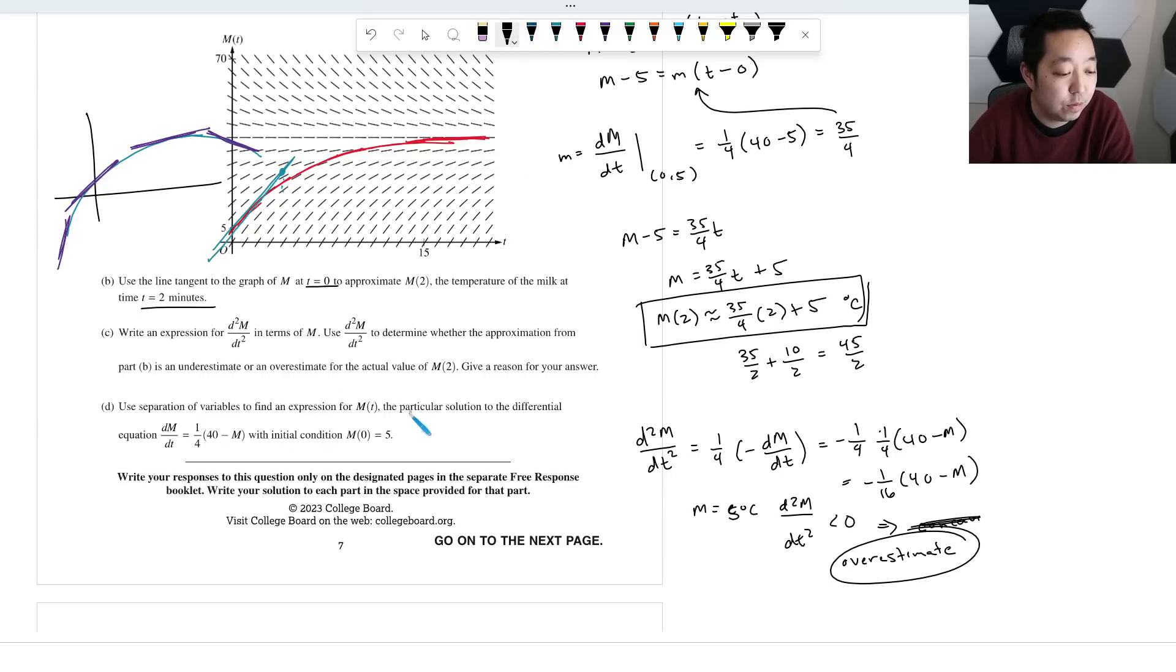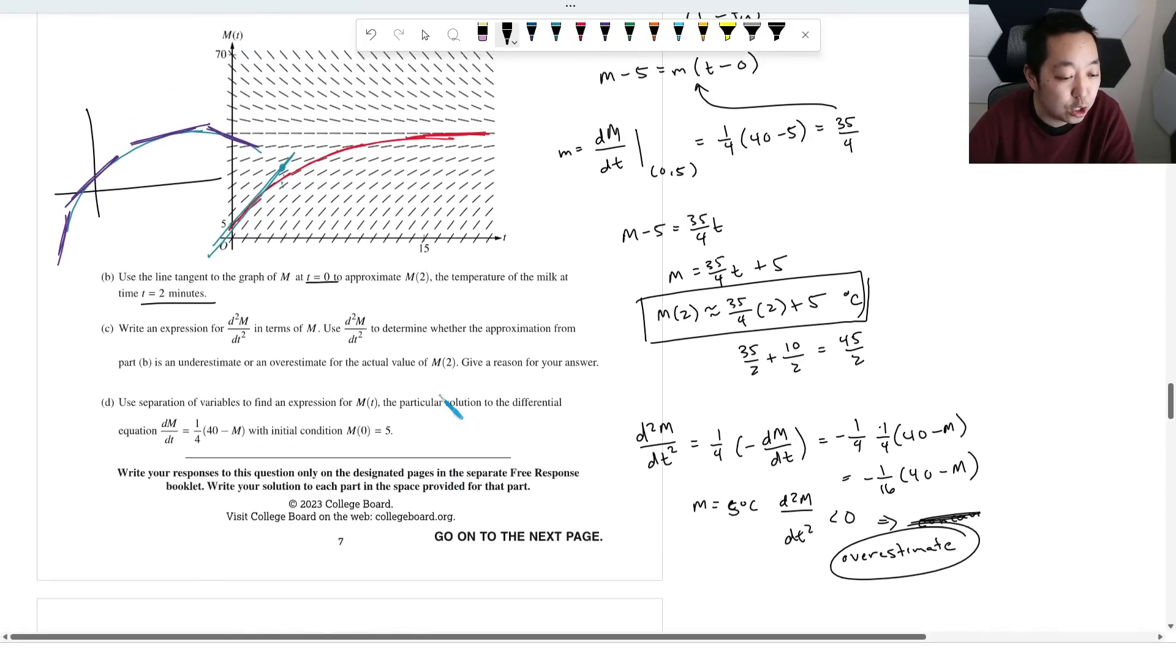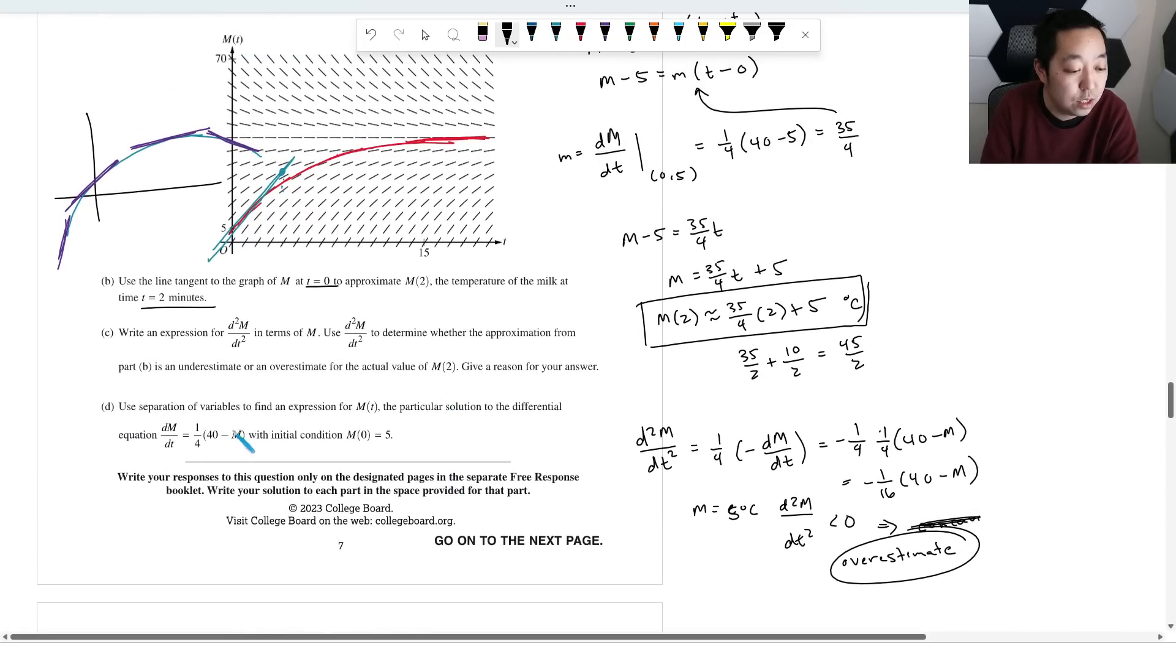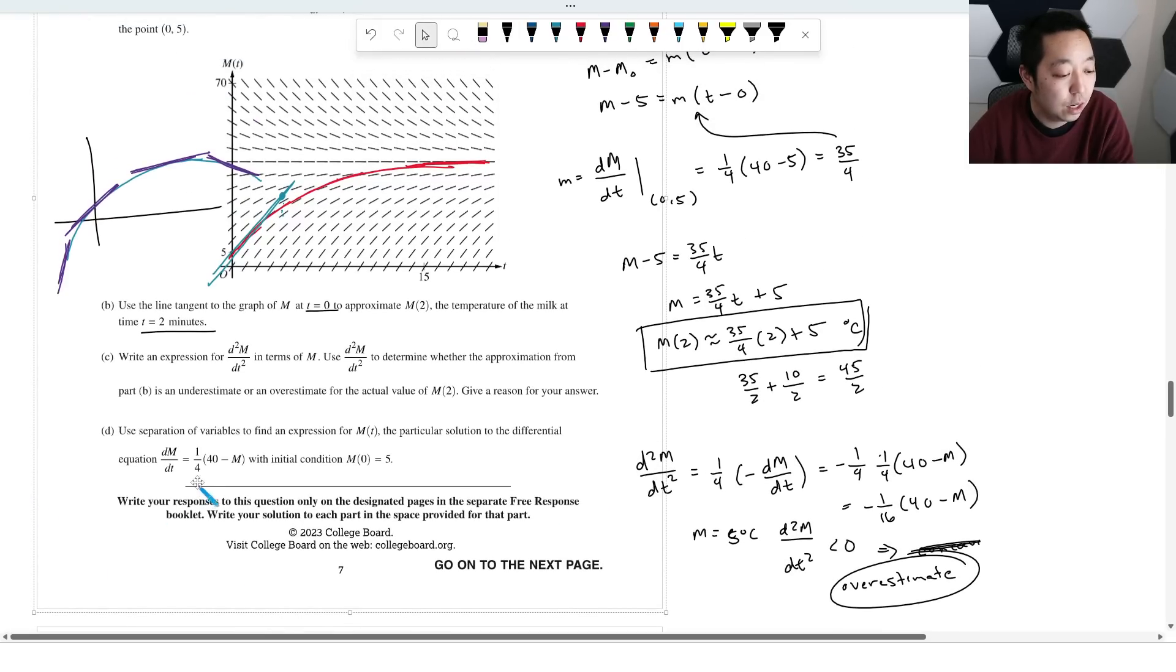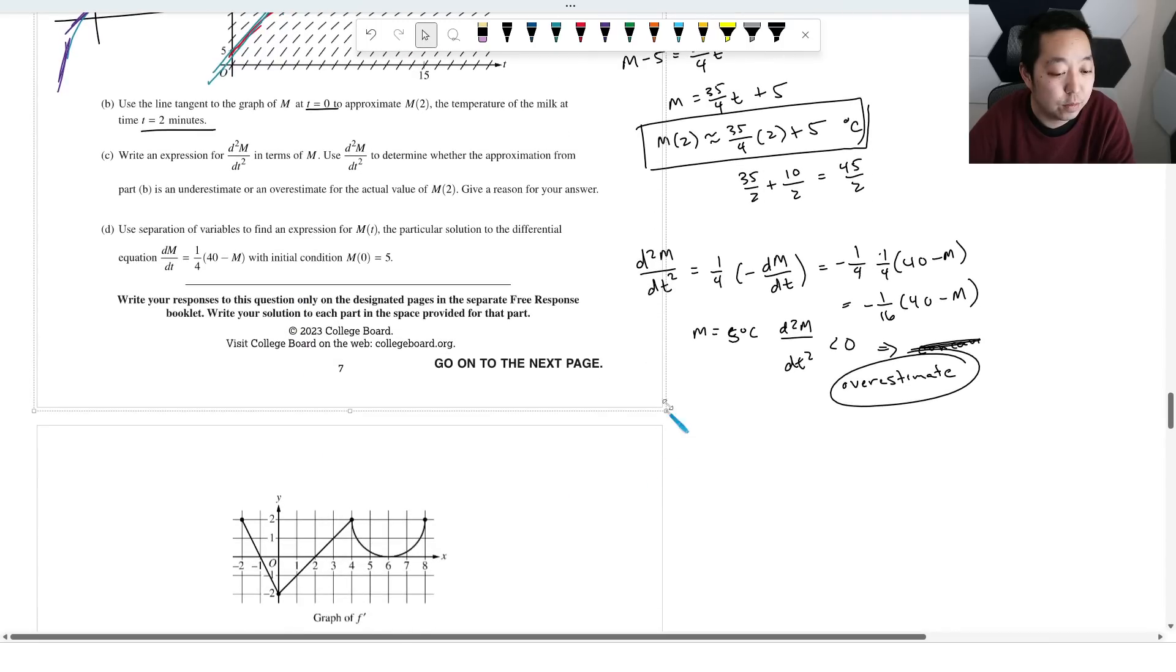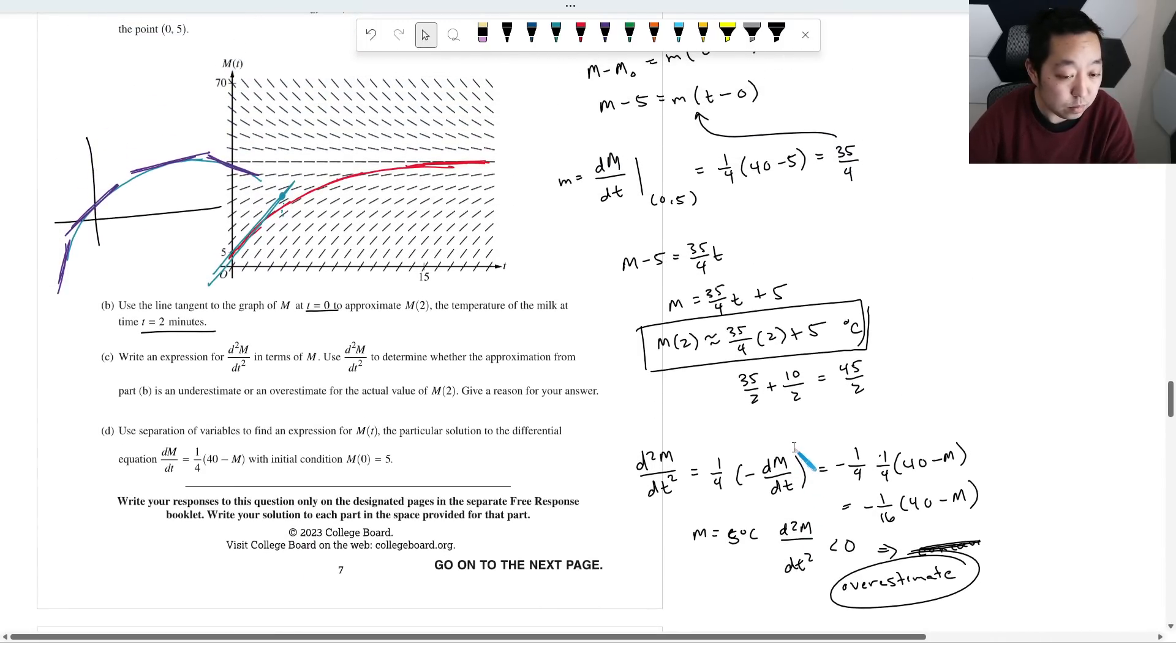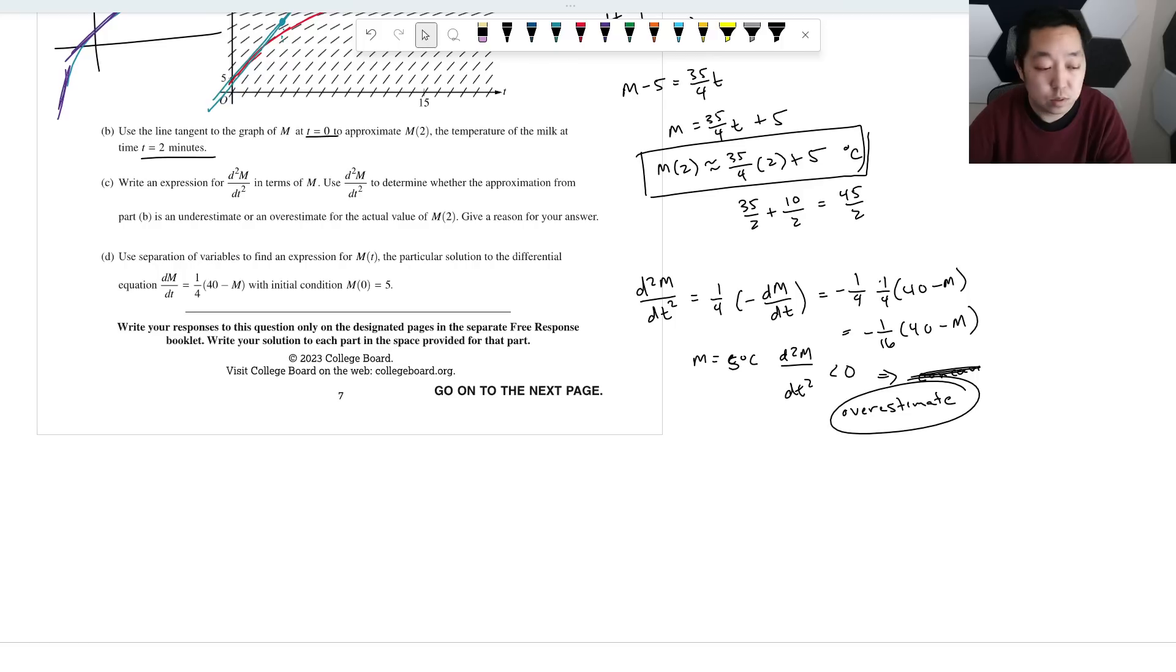All right. Use separation of variables to find M of T, the particular solution to the differential equation with initial conditions there. So how do I want to do this? I need to make a little bit more space just because the PDF they provided doesn't have a lot of space there. Give me one second while I do that. All right.